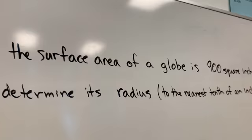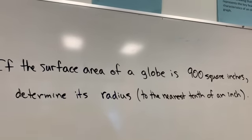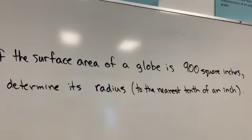The question goes like this: if the surface area of a globe is 900 square inches, determine its radius to the nearest tenth of an inch.